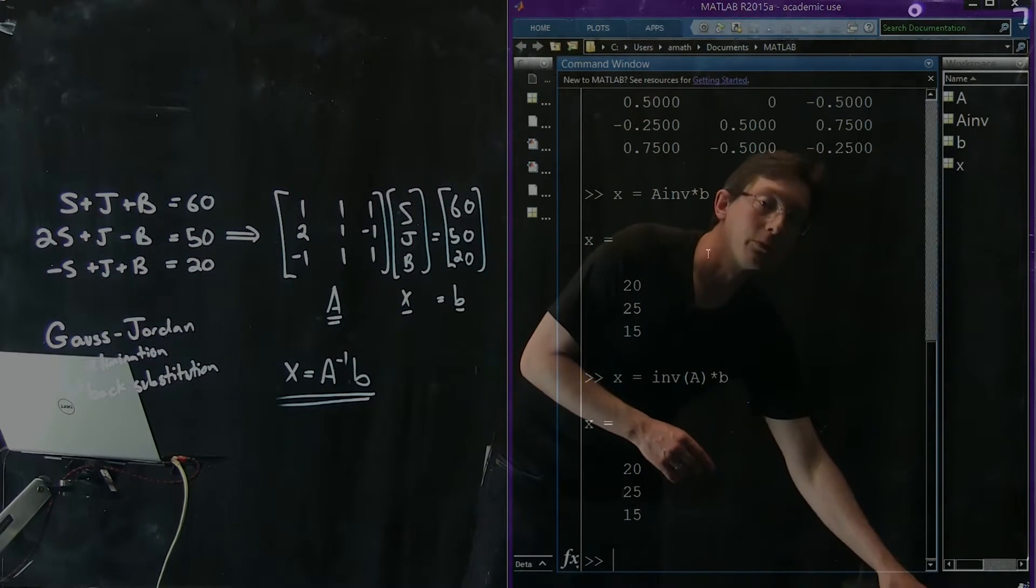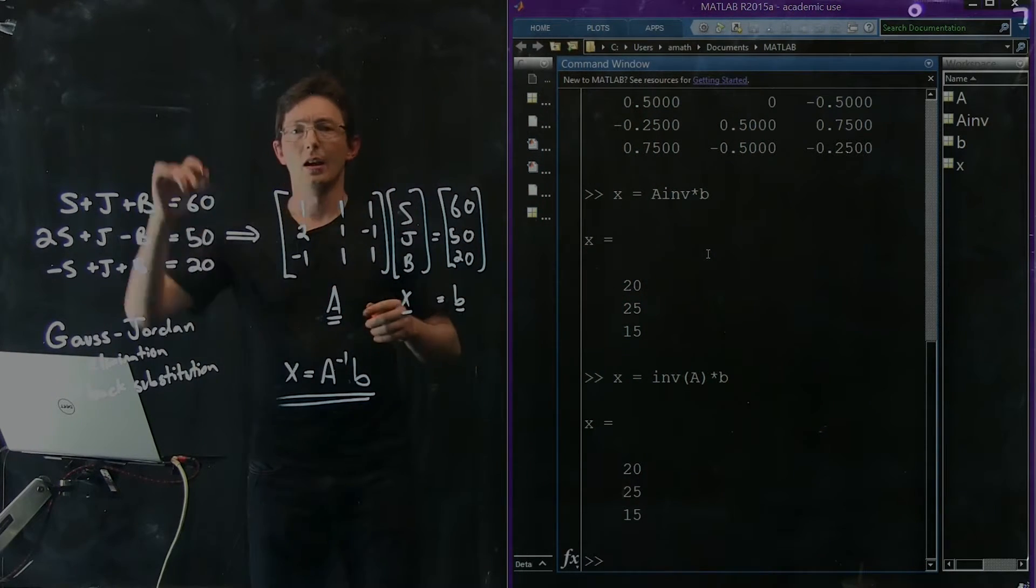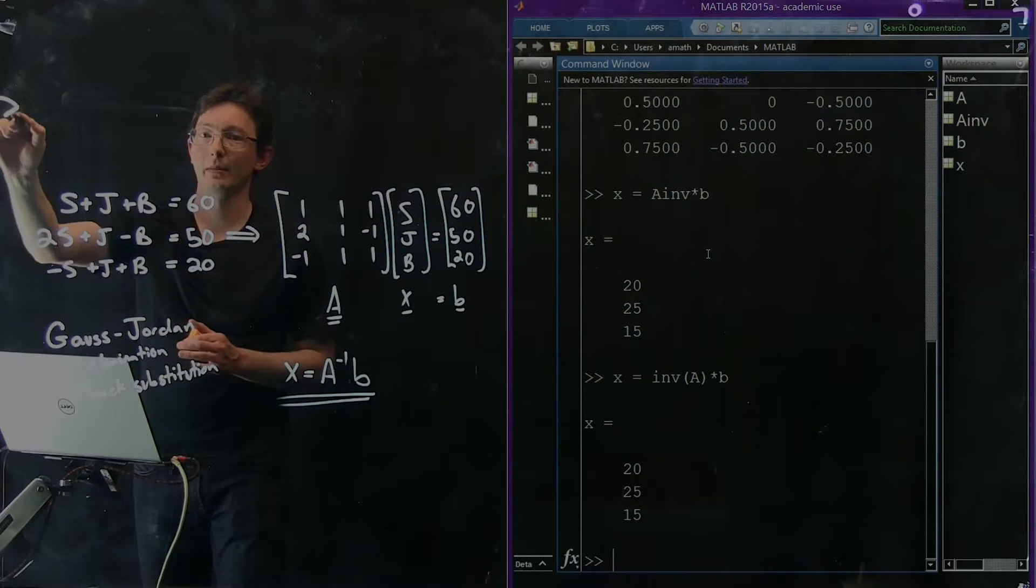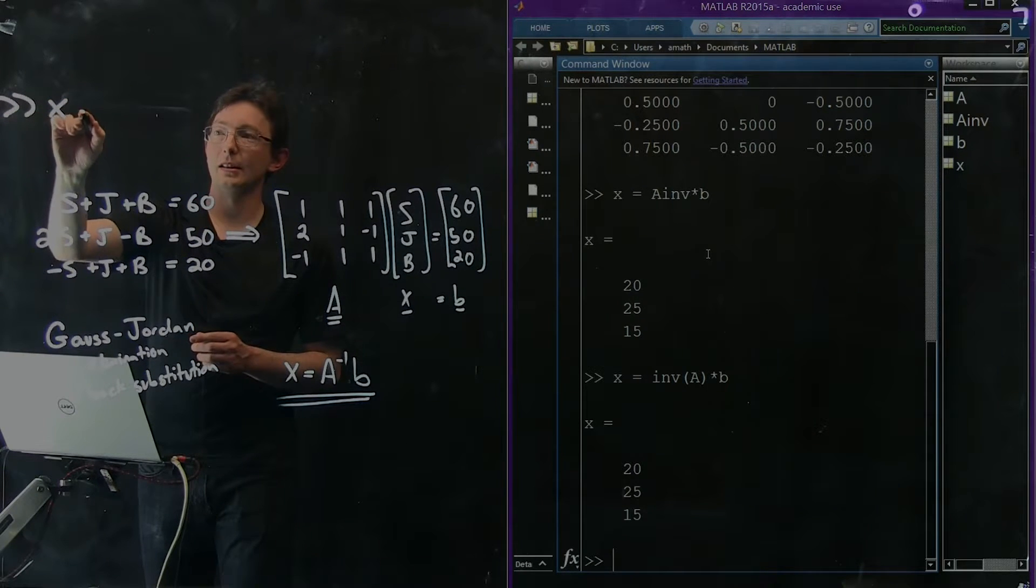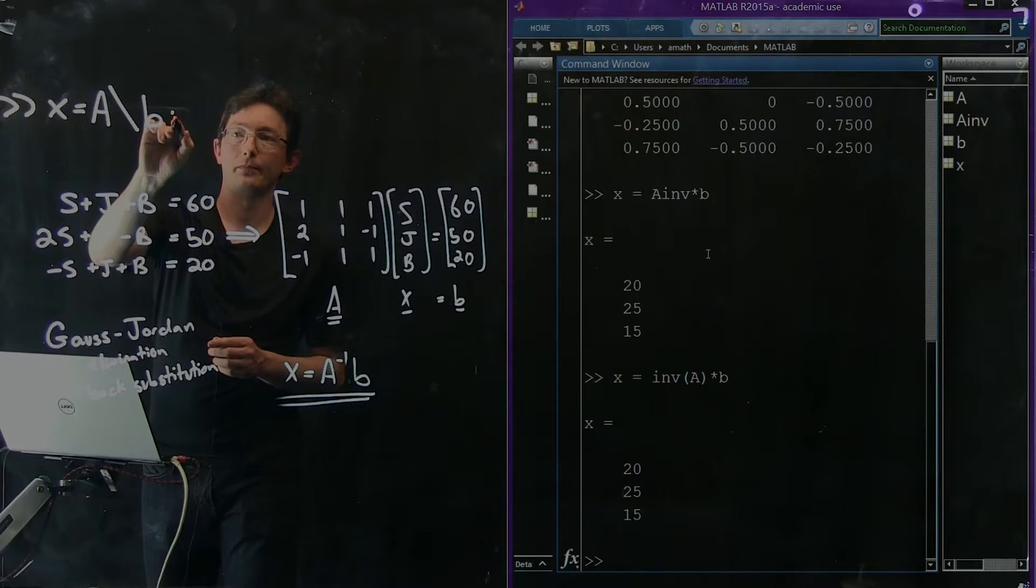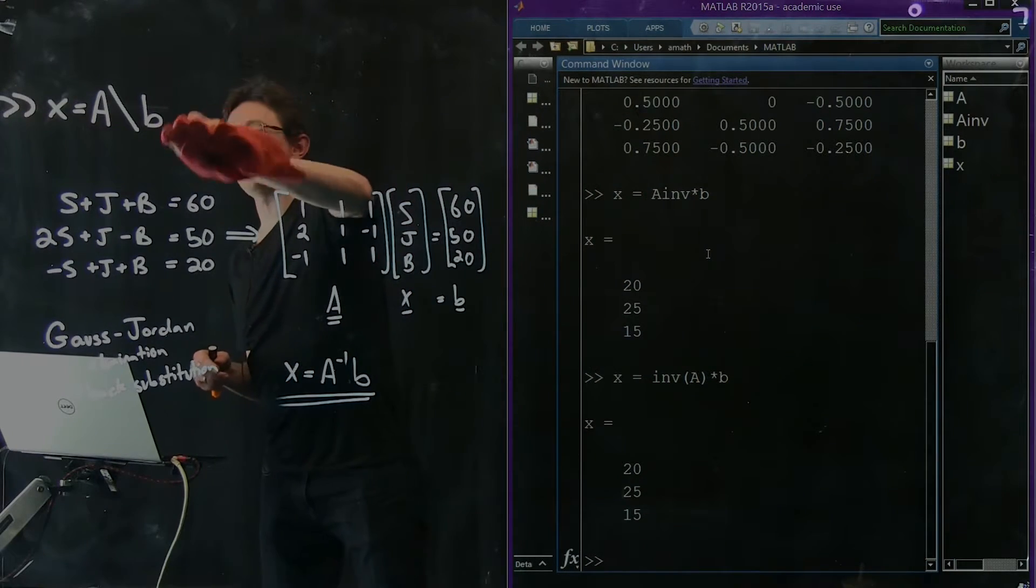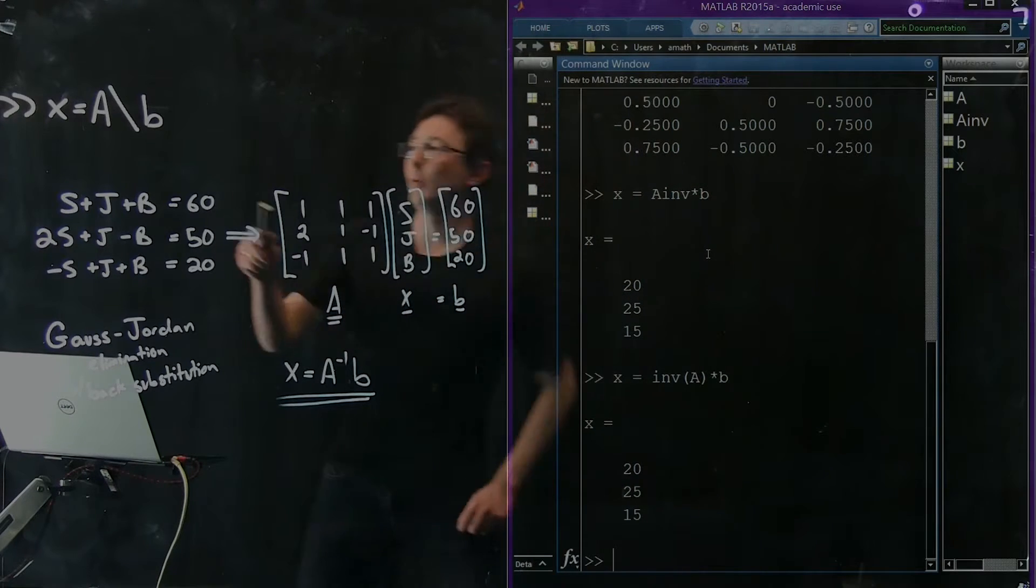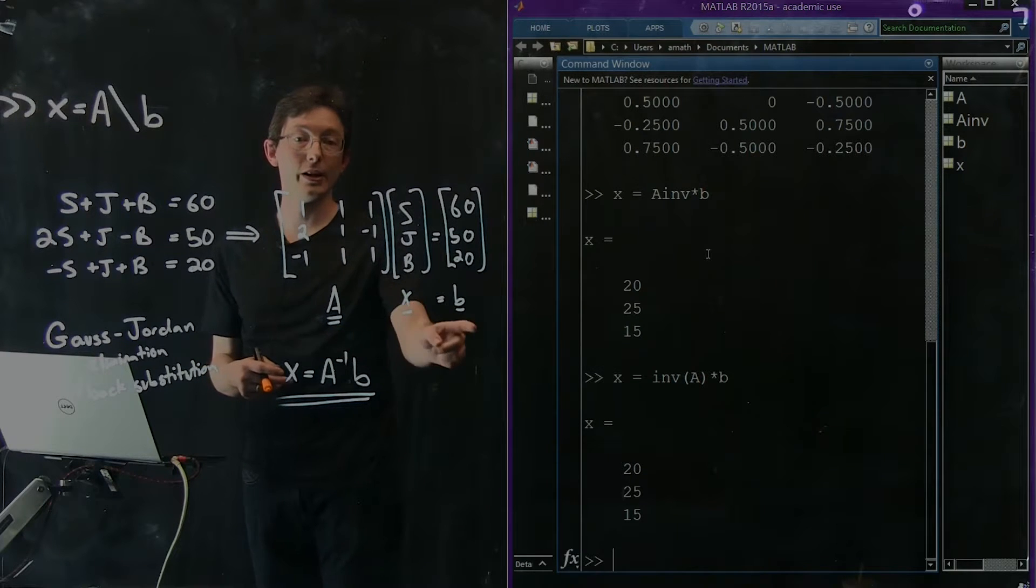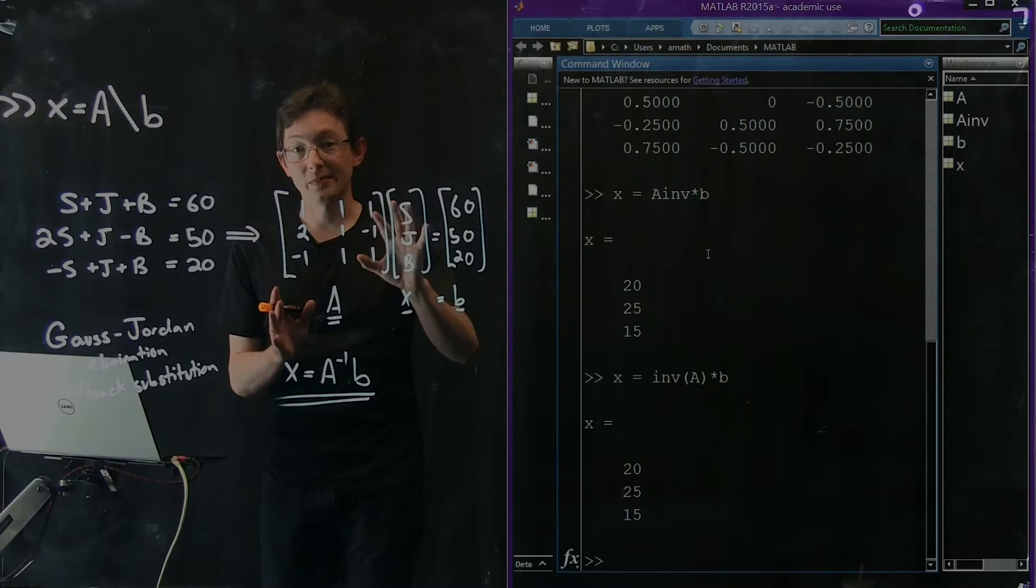Now in MATLAB, there is a really powerful built-in command called the backslash. In MATLAB, you say x equals A backslash B. Whenever you type x equals A backslash B, MATLAB knows that you're trying to solve this equation Ax equals B for x.